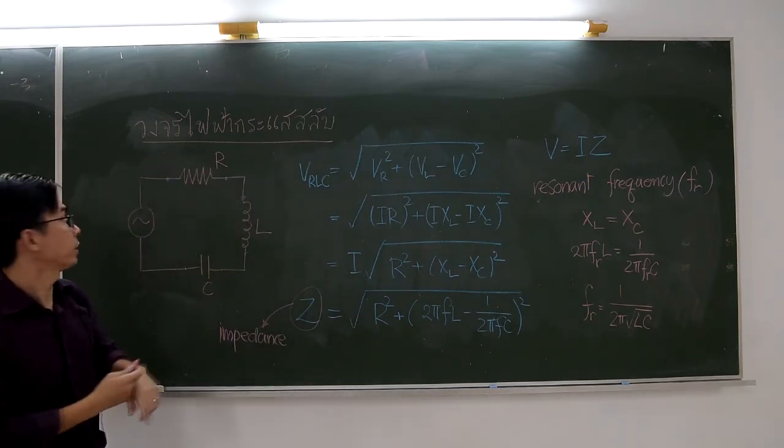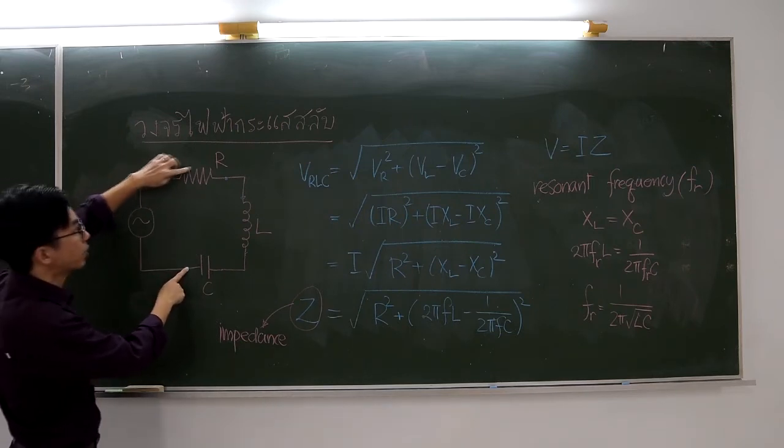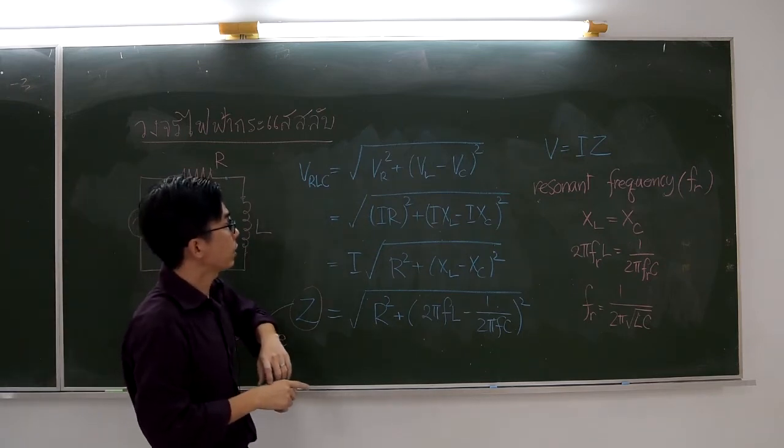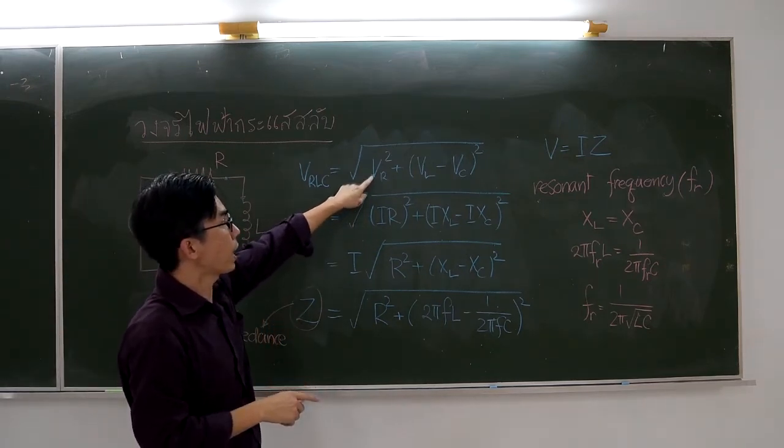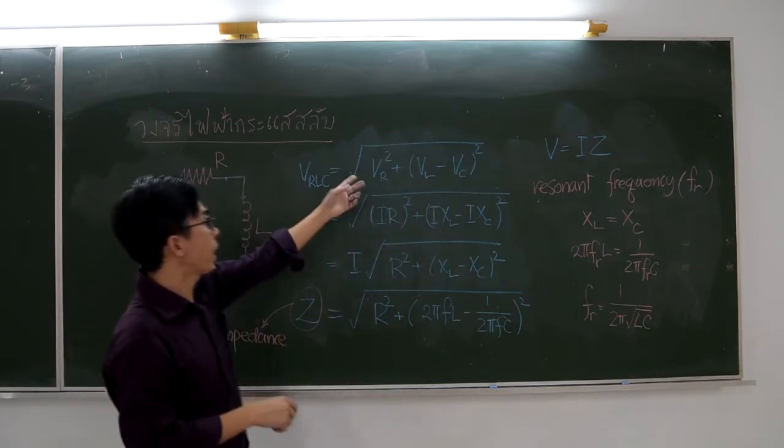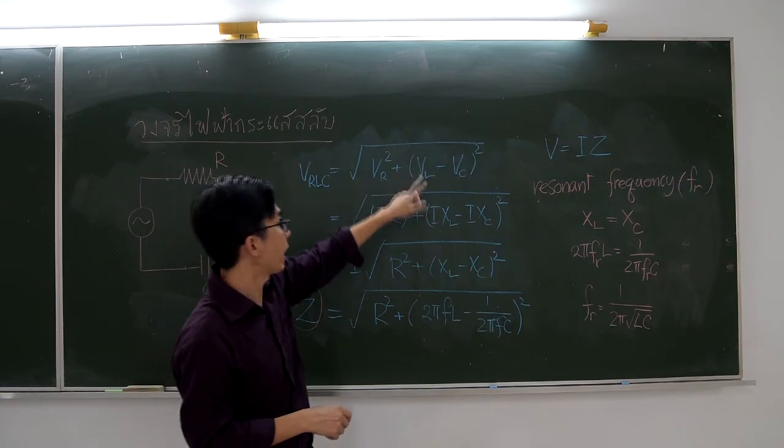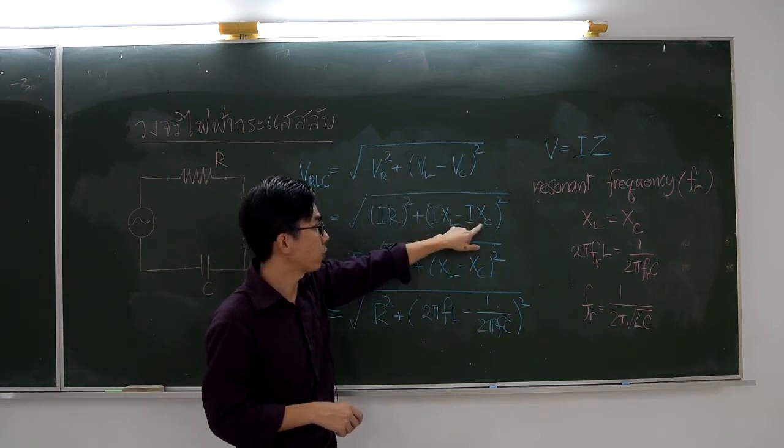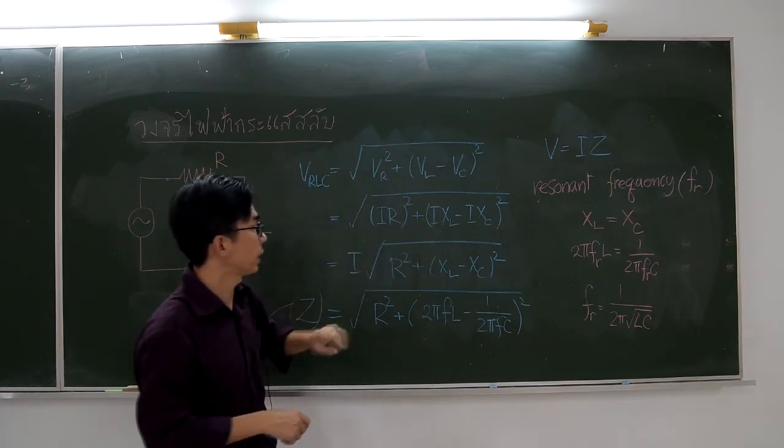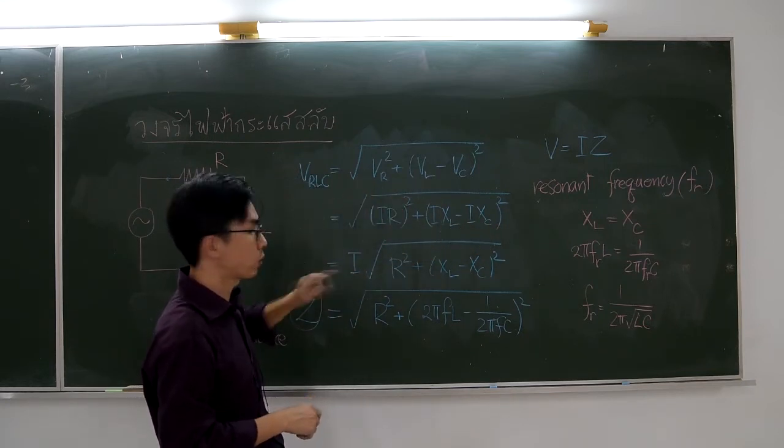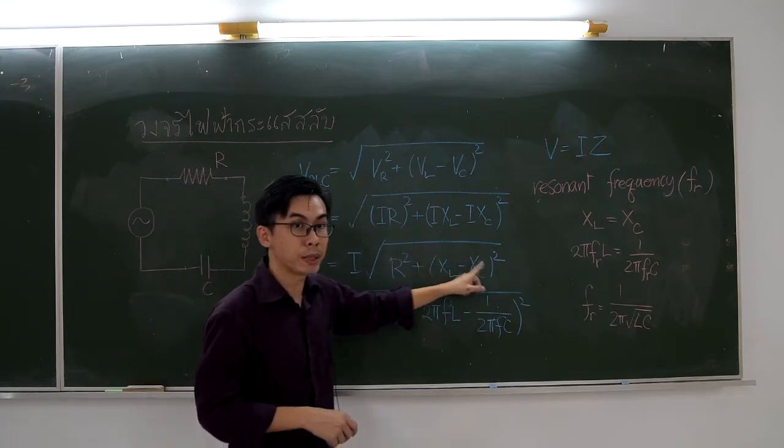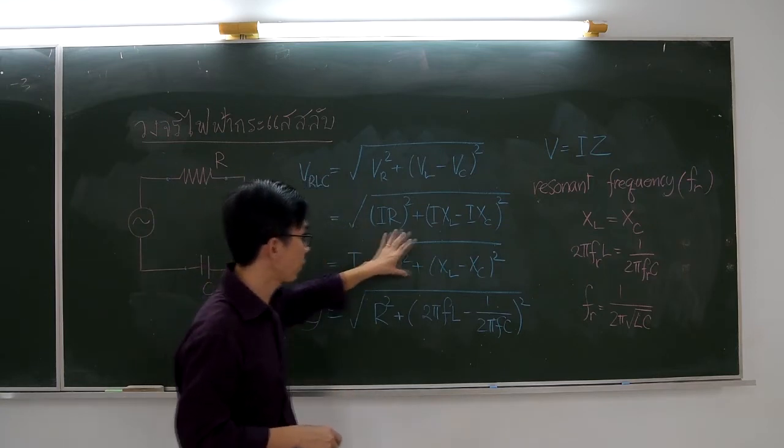Now, we call the voltage across all three elements as VRLC. We already know that VRLC is equal to the square root of VR squared plus VL minus VC squared. We will replace VR by IR and VL by IXL and VC by IXC. Because I is the common factor, we can pull it out of the square root sign.